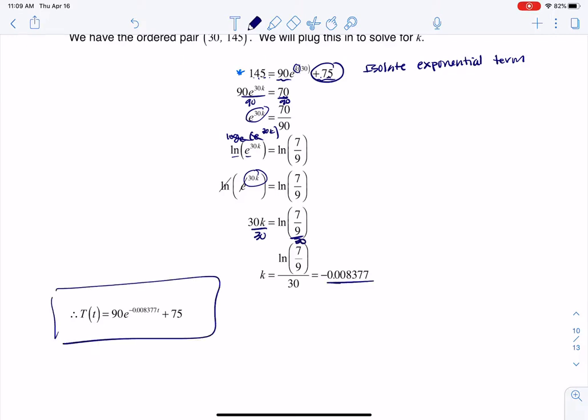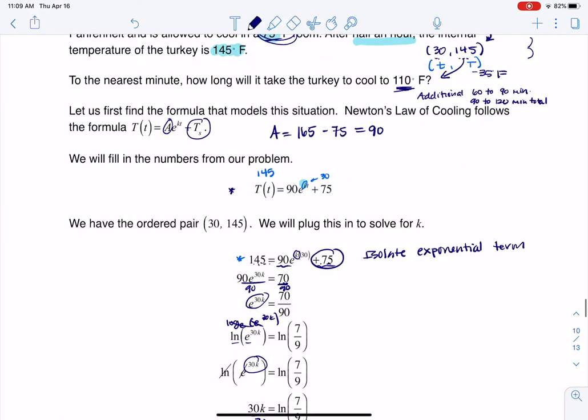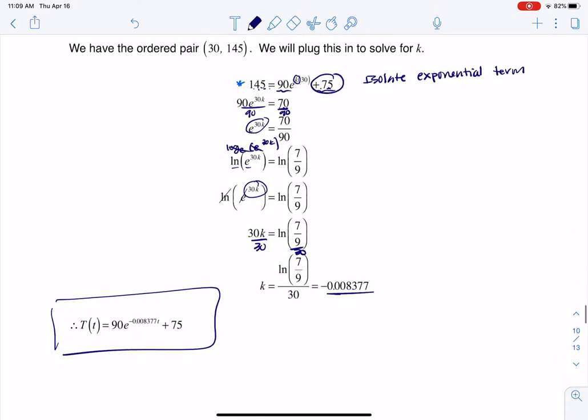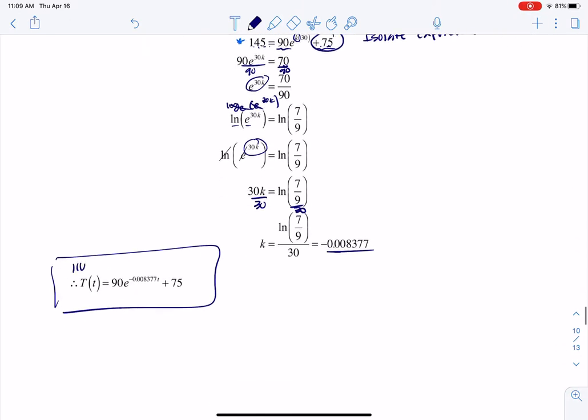So I plug that in. And there is my Newton's law of cooling model for this particular problem. And that's a lot right there. But we're not done. Because remember, it ultimately asks when does this thing get to 110? So I'm going to now plug in 110 for capital T. And I'm going to find out little t. How long does it take to do that? So I'm going to plug in 110 right here. And then I'm going to wind up solving for t.